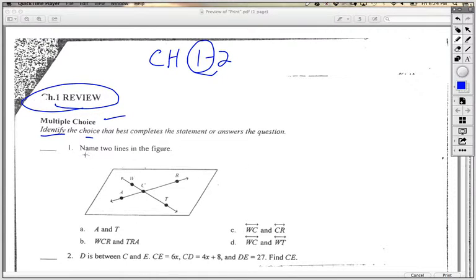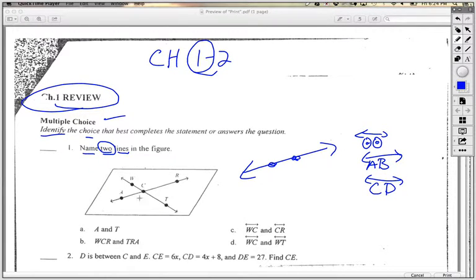So what's the question? It says name two lines. Now when we're talking about lines, they have to pass through a couple points and we also call these lines by little arrows on the top and bottom and it's given by two points, one point here, one point here. Like it could be line A, B, that's line segment. This would be line A, B. This would be line C, D. So let's look at what we have.